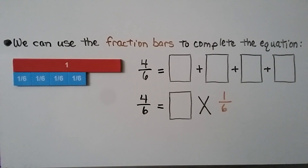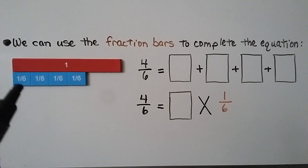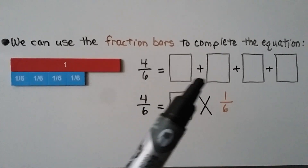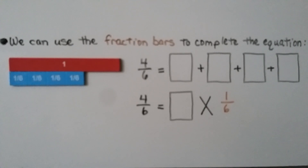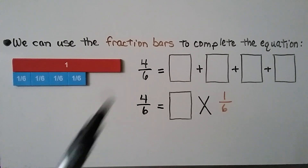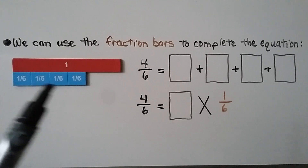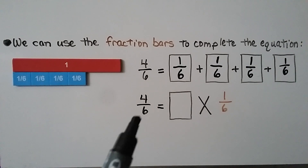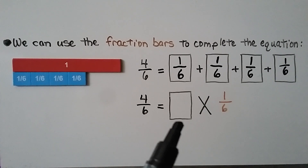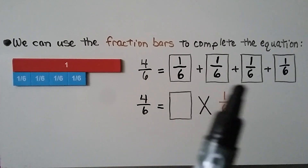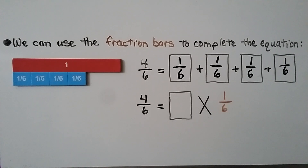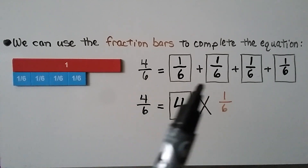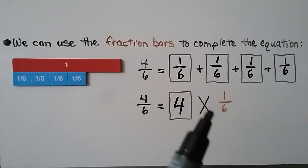We can use the fraction bars to complete the equation. We have one whole, and here we have 4 one-sixth parts. It's telling us that 4/6 is equal to some missing addends — 4 missing addends. Do you know what the 4 missing addends are? Looking at these fraction bars, we can see there are 4 one-sixth parts. Those must be the missing addends — they must be the unit fractions, 1/6. That means 4/6 is equal to some whole number times 1/6. We see there are 1, 2, 3, 4 of them, so it would be 4 times 1/6.